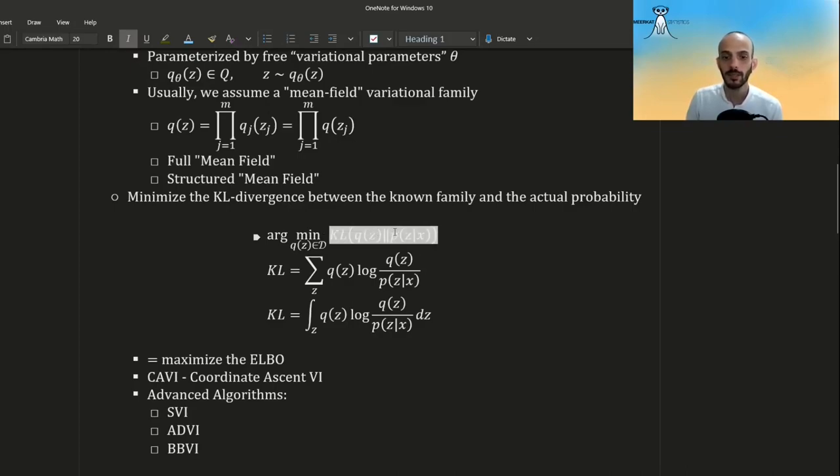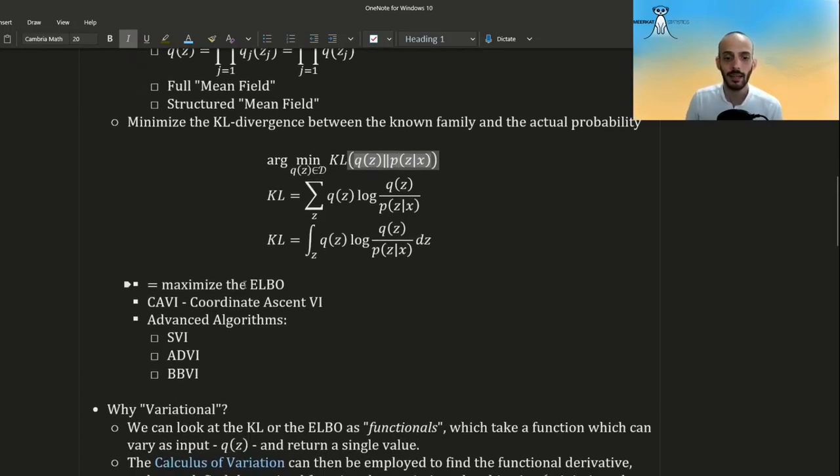But because we are using the KL divergence, we will see that the normalizing constant will become irrelevant. And then we will only have to optimize the ELBO, the stuff that we actually know.